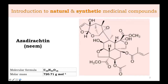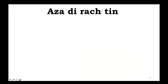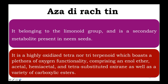Azadirachtin has a very complex molecular formula, so it is better to remember it carefully. The molecular formula is C35H44O16 and its molecular mass is approximately 720. Azadirachtin belongs to the limonoid group of compounds.